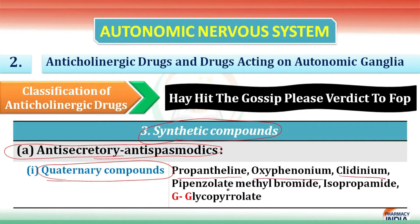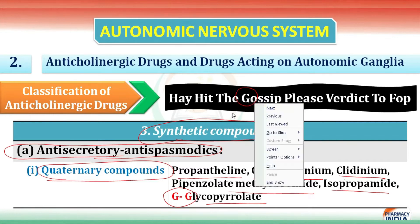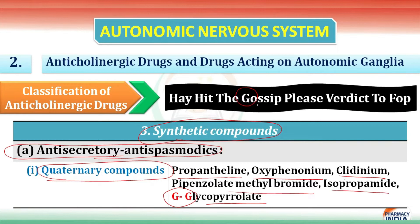The quaternary compounds include clidinium, pipenzolate methyl bromide, isopropamide, and glycopyrrolate. You can learn these using 'GOSSIP': G for glycopyrrolate, O for oxyphenonium, P for pipenzolate or propantheline.